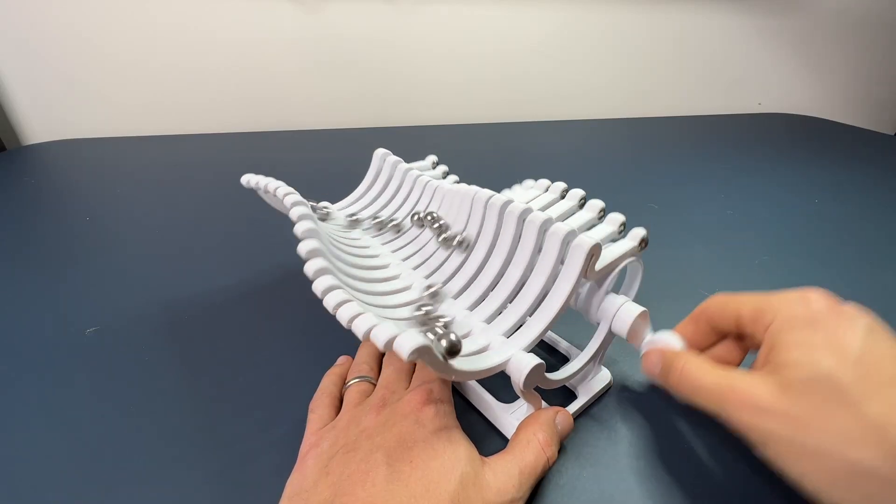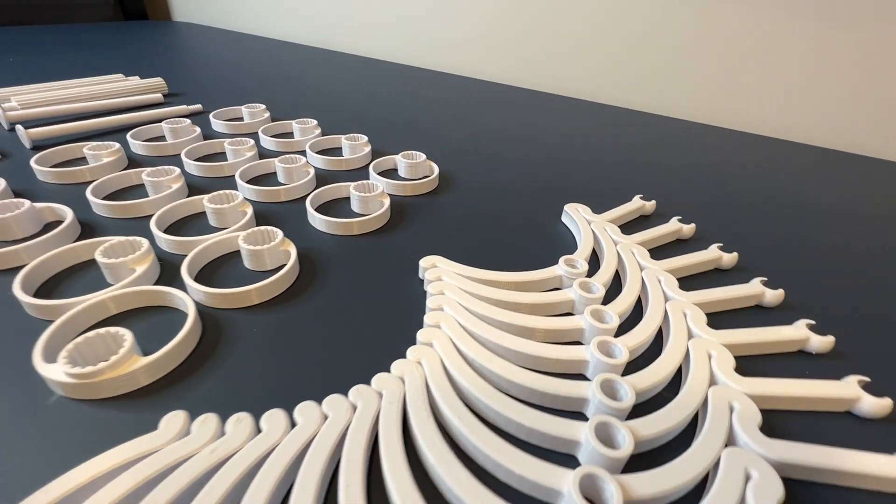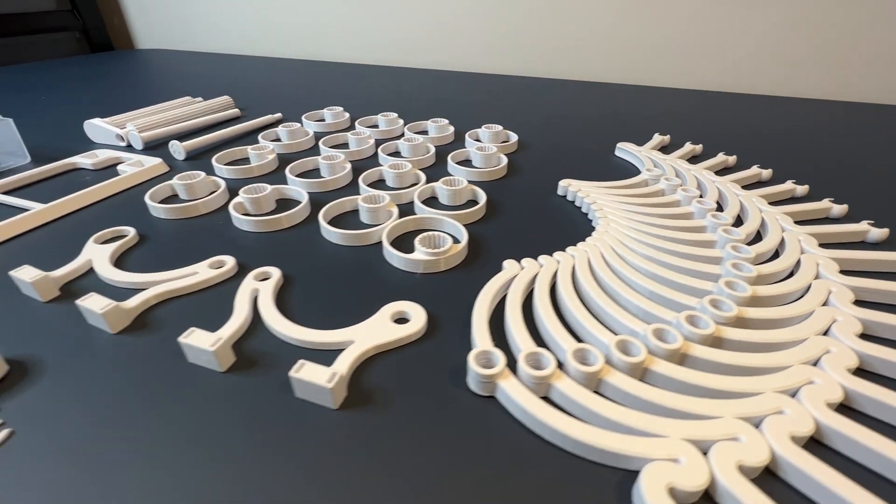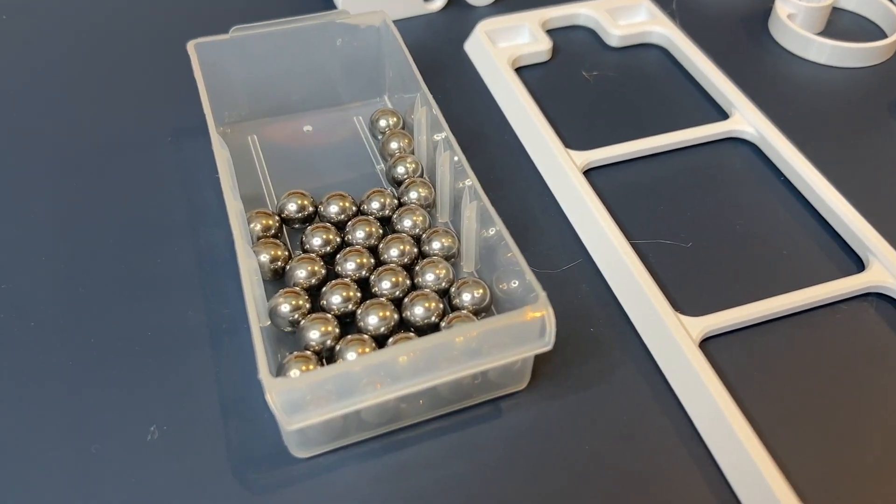In this video I'm going to be showing you how to assemble the Horseshoe Wave Kinetic Sculpture. All the parts are 3D printed and the files are available on my website. The link is in the bio. The only additional parts you're going to need are these half inch ball bearings.